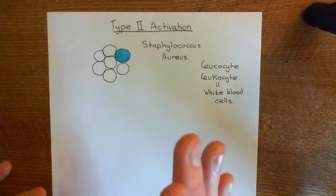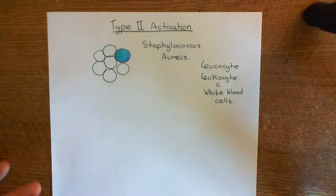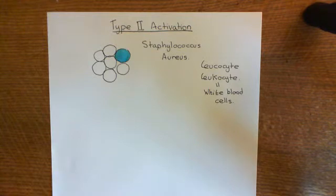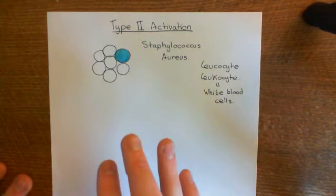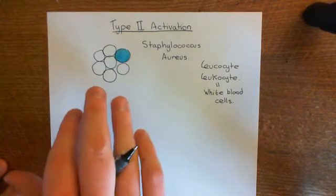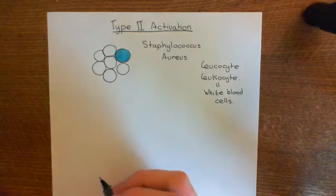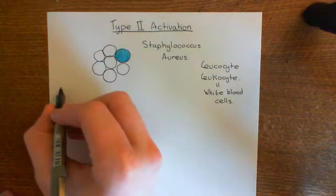The inflammatory response is really a response on the level of the blood vessels. So we're now going to discuss the three different types of blood vessel that you're going to have in the neighbourhood of your tissue, and just have a little review of the circulatory system.